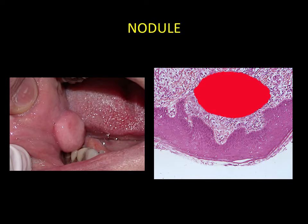Nodules. These correspond to a full tissue elevation. They are around one centimetre in diameter and are most commonly associated with underlying benign tumours.